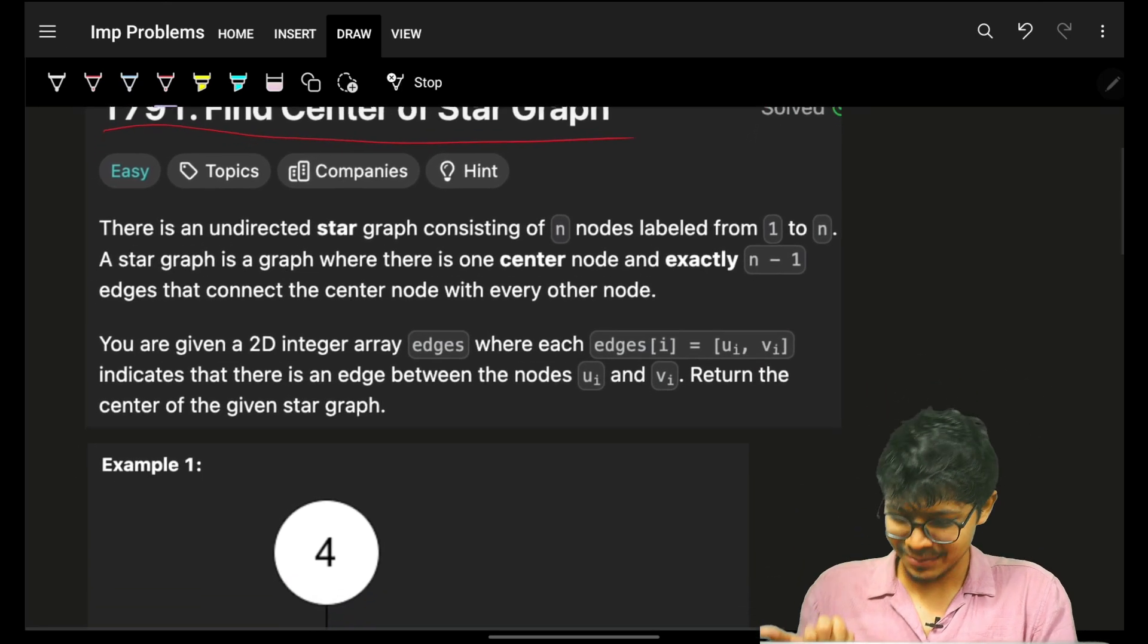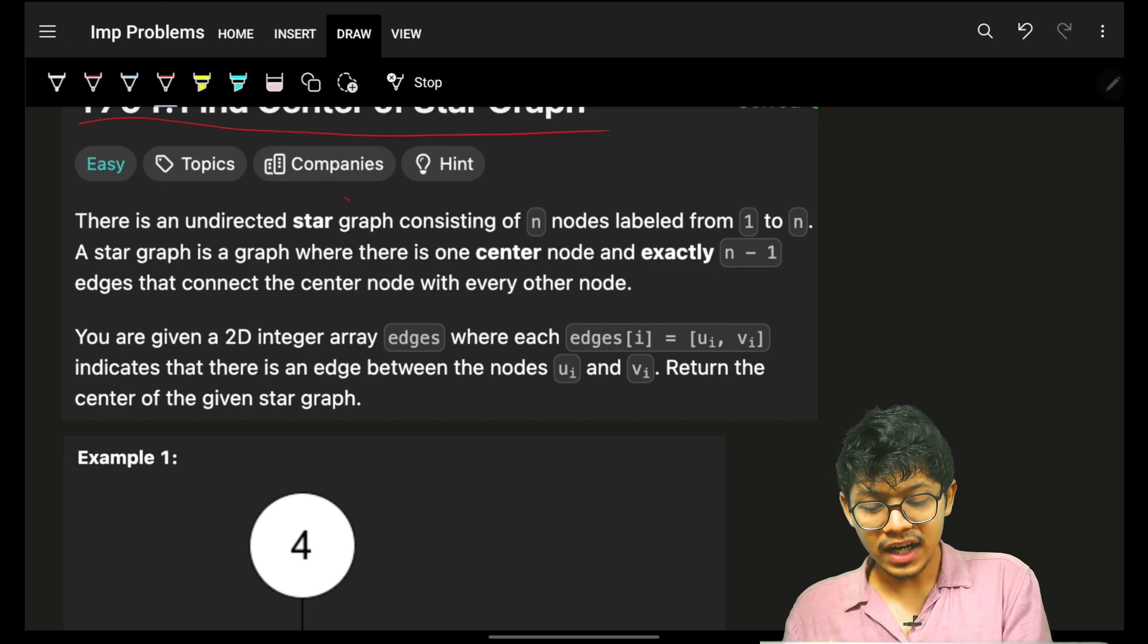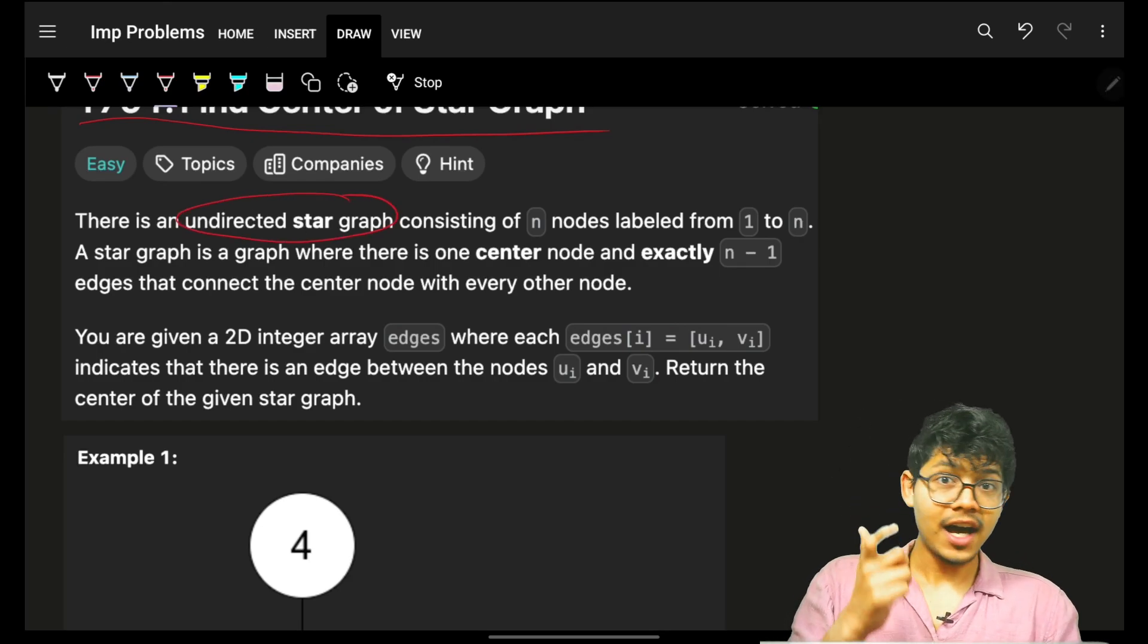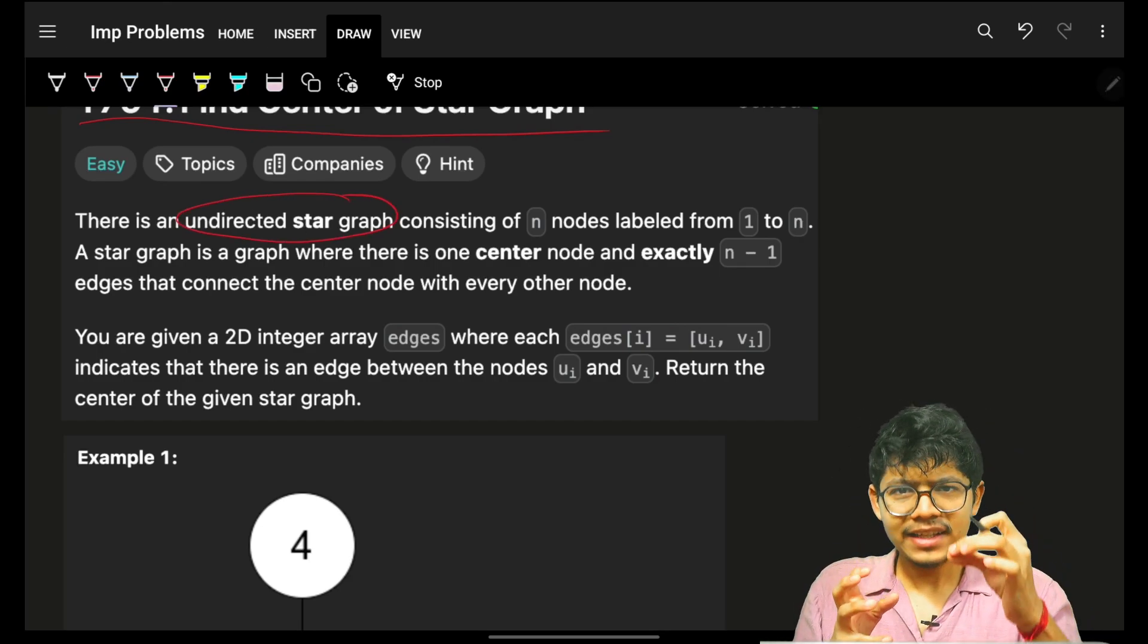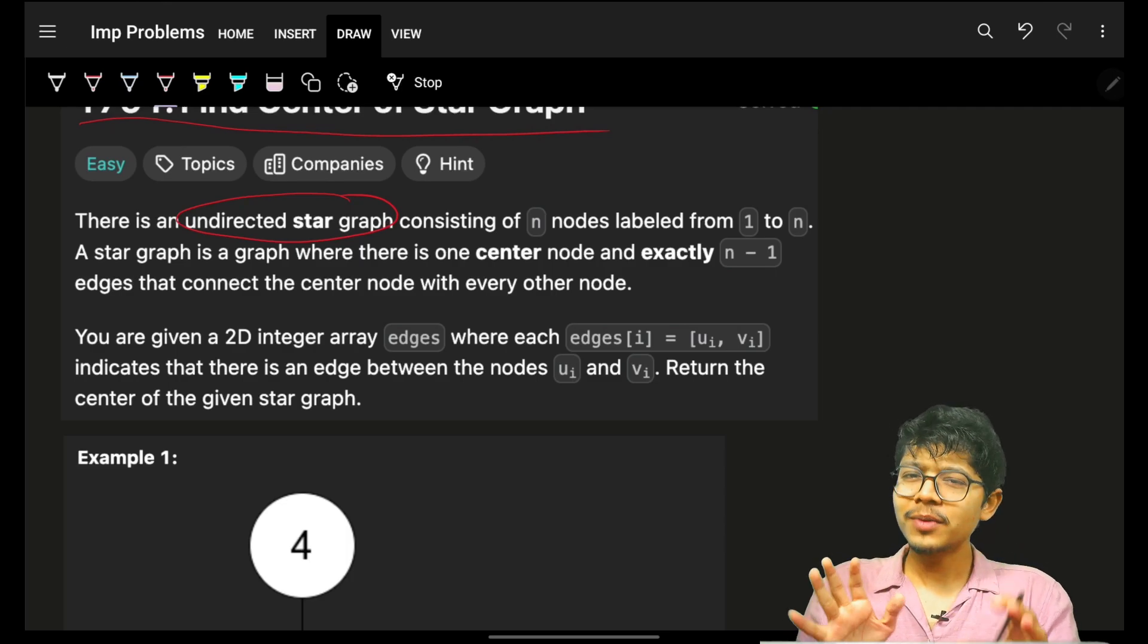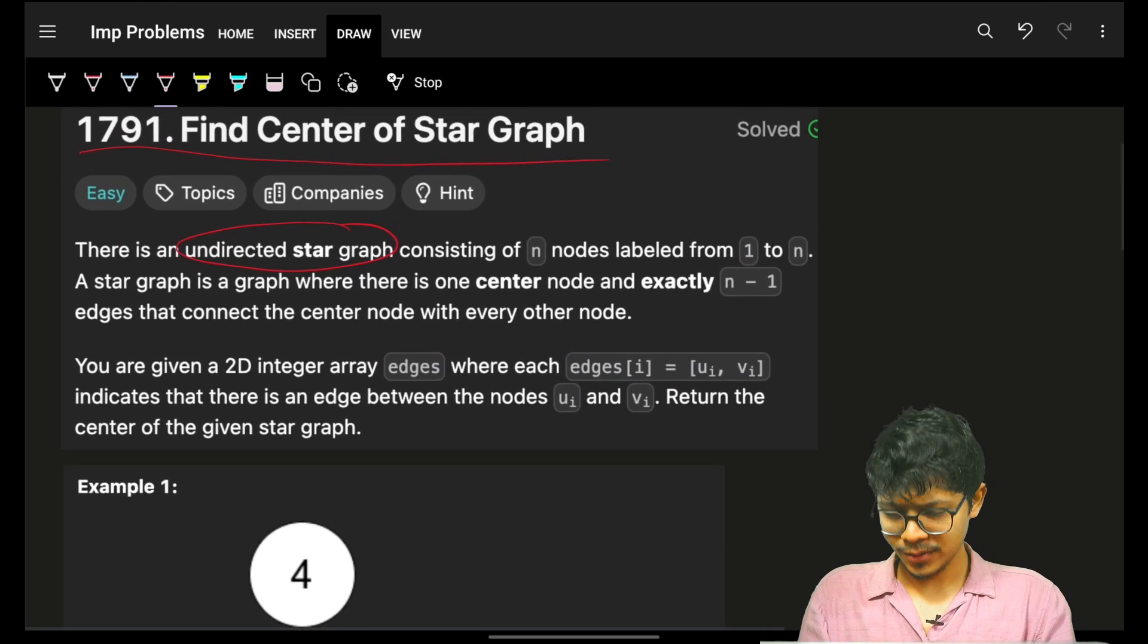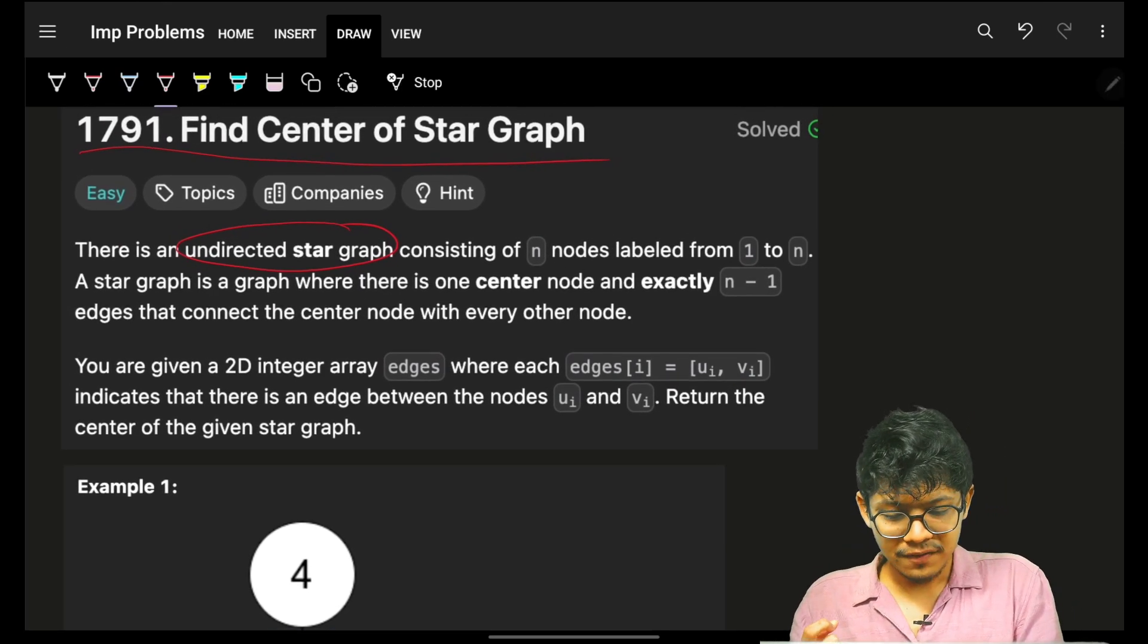Let's quickly see the problem. It simply says that we are given an undirected star graph. By reading the word graph itself, you might even feel it's a graph problem, but let's continue. It has n nodes labeled from 1 to n.